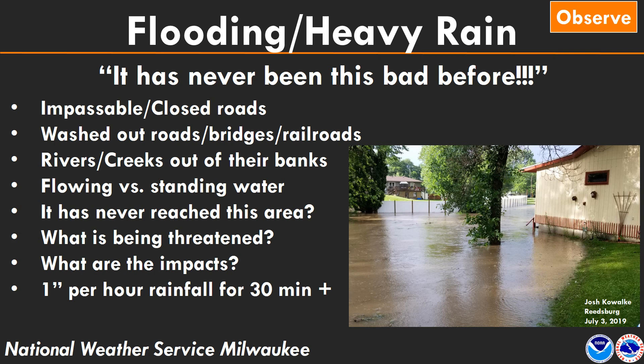For flooding, the main things you can report are roads that are closed or impassable, washed-out roads, bridges, or railroads, and rivers or creeks that are out of their banks — not just normal standing puddles on streets. If it's something you've never seen that bad before, or water has reached a new area, report what is being threatened and what the impacts are. Generally, we become interested in rainfall amounts of at least one inch per hour for at least 30 minutes, since anything lower typically won't produce flash flooding.